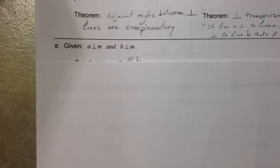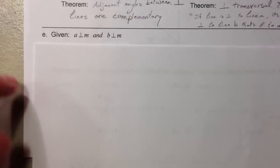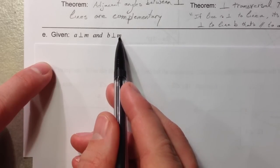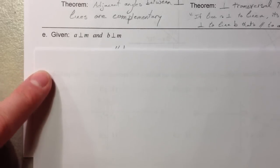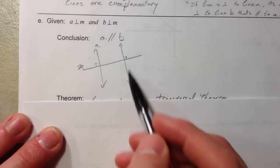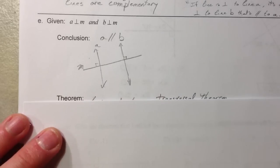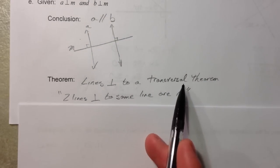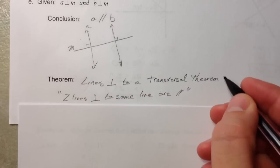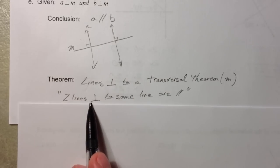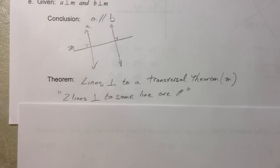The final theorem: if you have line a perpendicular to m, and line b perpendicular to m, they're both perpendicular to the same line, so they must be parallel. This is called the 'lines perpendicular to a transversal' theorem — m being the transversal, the lines perpendicular to it are parallel to each other. So if two lines are perpendicular to the same line, then they are parallel.